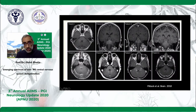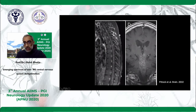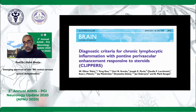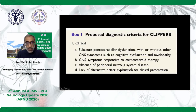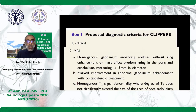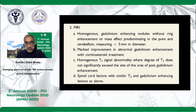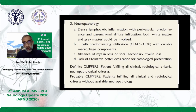The diagnostic criteria by the same group came in 2017: if you have subacute pontocerebellar dysfunction, responsive to steroids, and no better explanation — think about Clippers. If you have this typical classic pattern of enhancement, think about Clippers. It can happen even in the spinal cord, not just restricted to the pons — the enhancement is typical pepper-like nodular enhancement, linear in the spinal cord. Pathology will show predominant infiltration of cells — in our patient, CD8 was more than CD4, so we're not certain whether this is really Clippers or not.